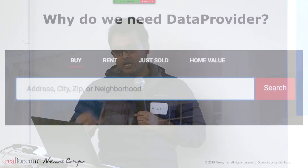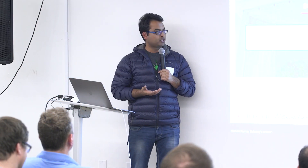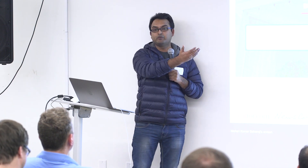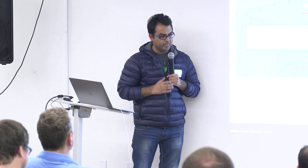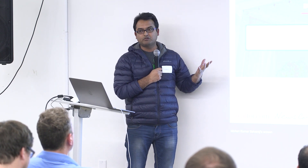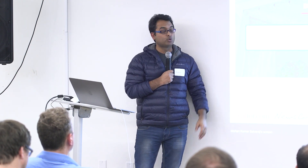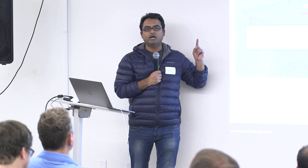Why do we need data provider? This is the search box from our home page. The placeholder text shows you can search with an address, city, state code, zip code, neighborhood, school, and more. There are also context tabs at the top, so you can perform the same search in the context of buying a property, renting a property, sold properties, and so on.